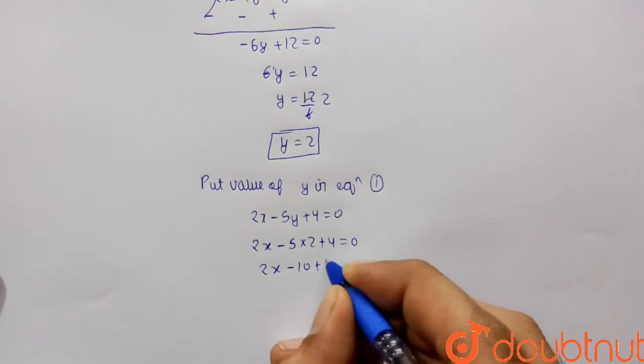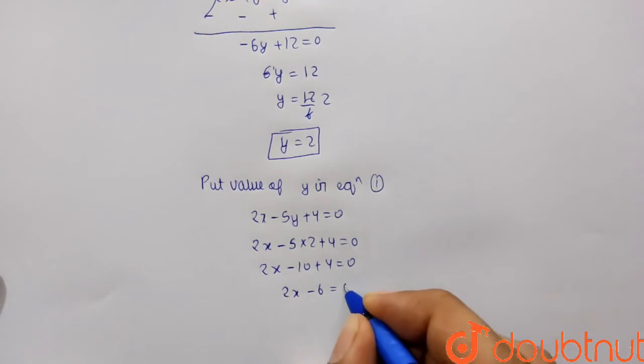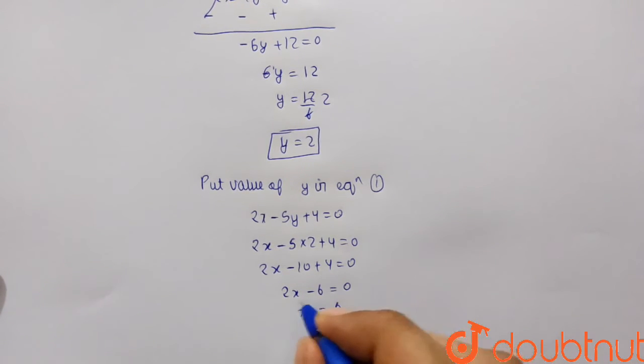So 2x minus 10 plus 4 equals 0. So 2x minus 6 equals 0. So we have x equals 6 will be positive and 2 will be in denominator. So x will be 3.